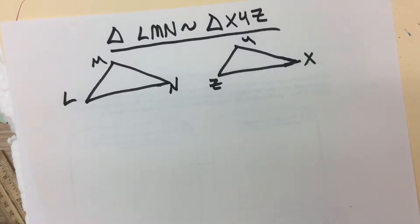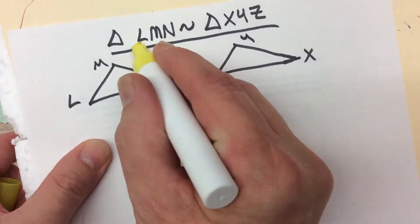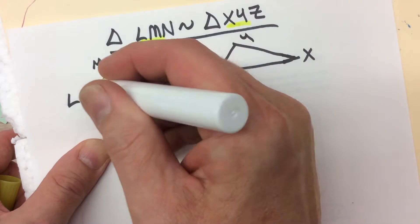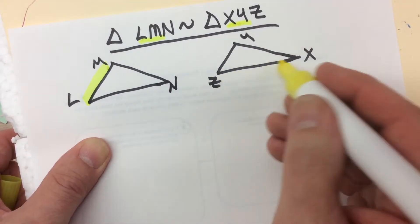If you're given two triangles and you're told that they're similar, here's how you read the similarity statement. Notice LM and XY are the first two letters in both triangles. These are the two sides that correspond to each other.